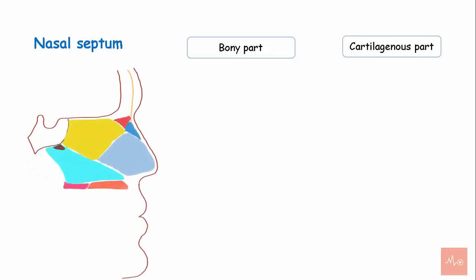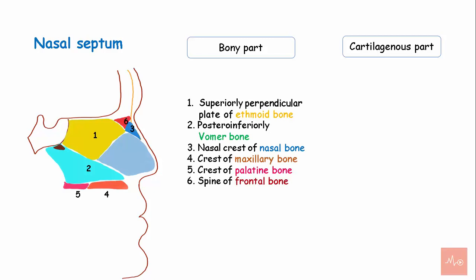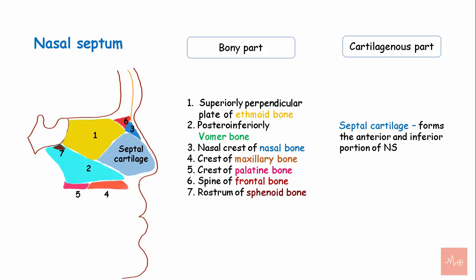The nasal septum is made up of a bony part and a cartilaginous part. The bones that make up the septum are: superiorly, the perpendicular plate of the ethmoid bone; postero-inferiorly, the vomer bone; and contributions from the nasal crest of the nasal bone, crest of the maxillary bone, crest of the palatine bone, nasal spine of the frontal bone, and the rostrum of the sphenoid bone.